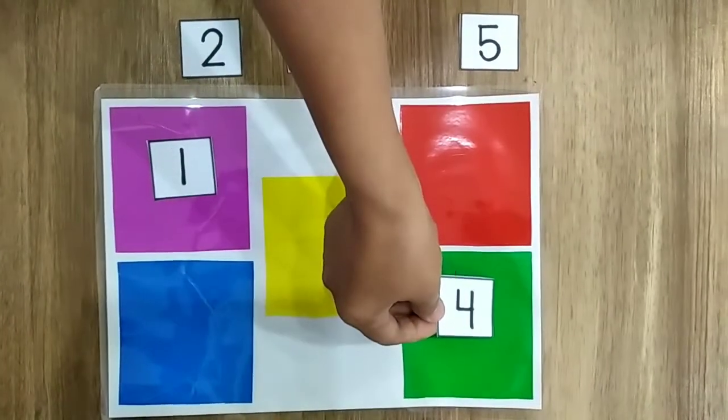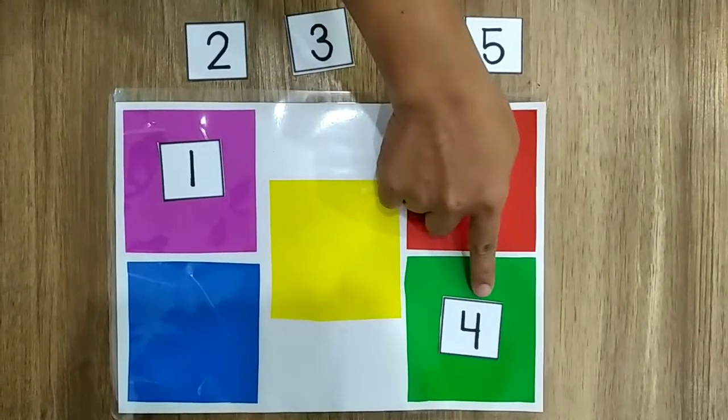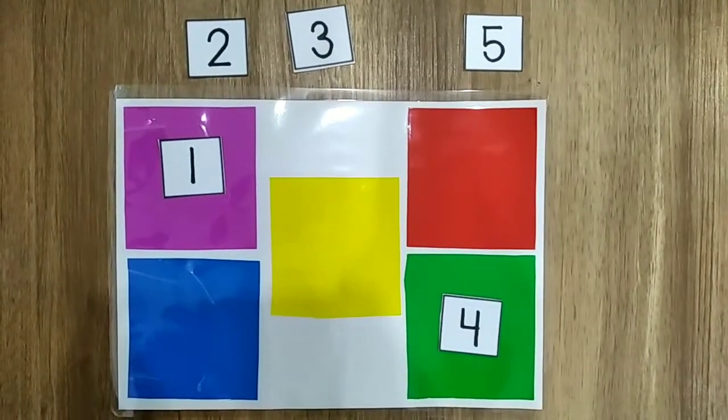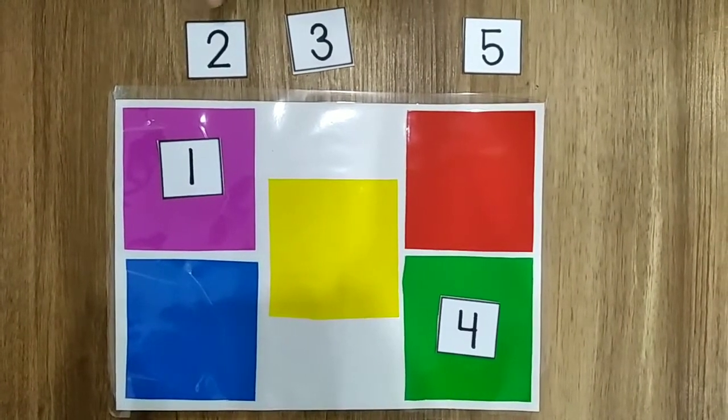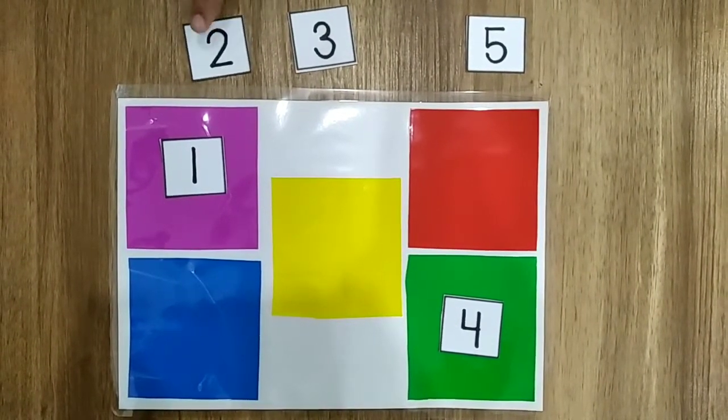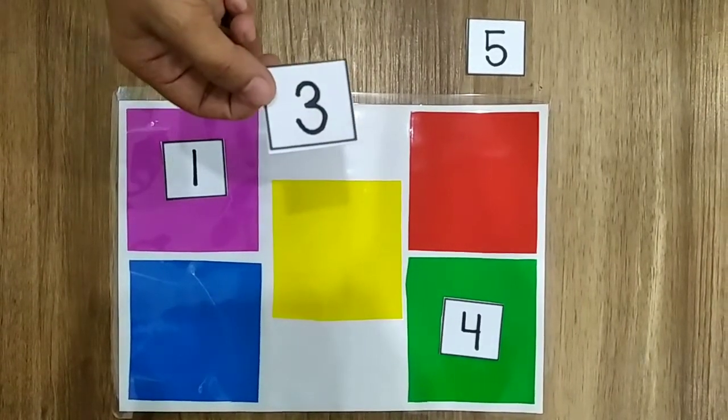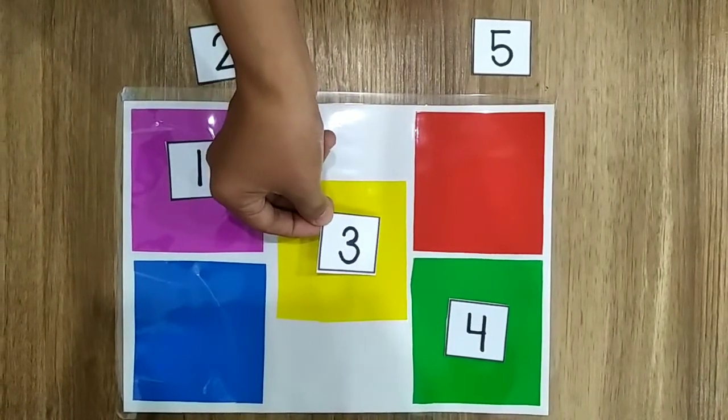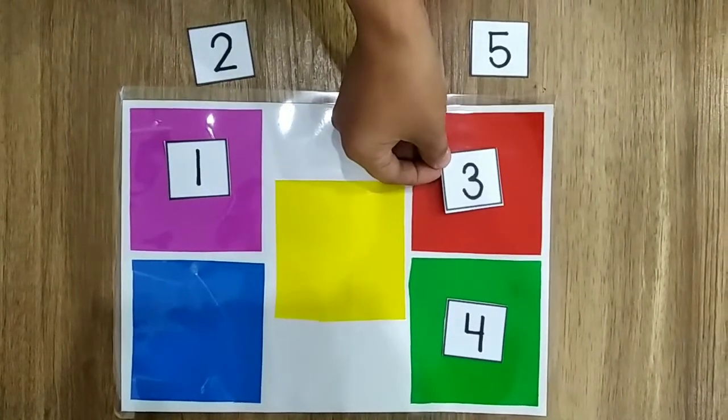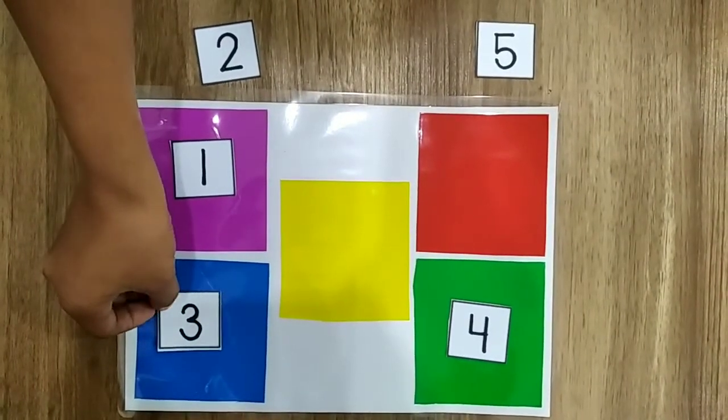Uh-oh. Yes, green square, number four. Do you know which one is number three? Yes, this is number three. Put number three on the blue square. No, no, no. Yes, it's the blue square.